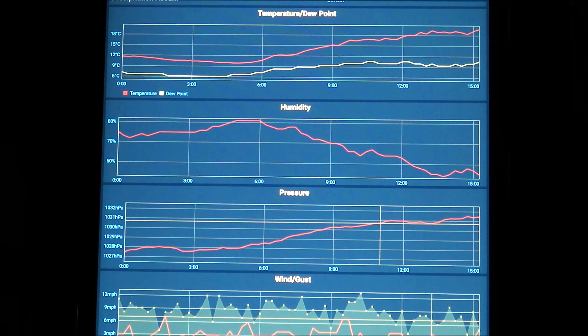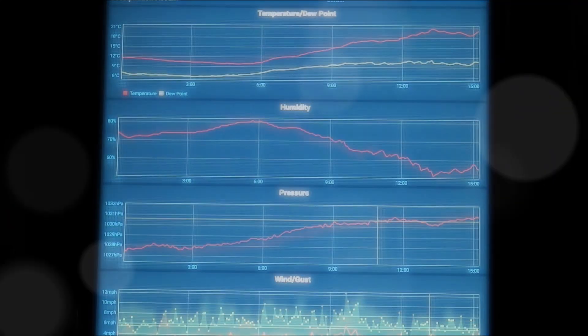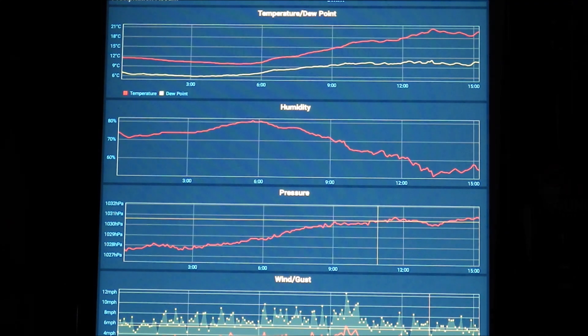We mentioned earlier that we have a semi-professional station running alongside the EcoWIT station. Here's a capture of the graphical display from the semi-professional station, and here's the EcoWIT data. You can see they're very closely aligned. In fact, the EcoWIT updates to Weather Underground every minute, whereas the semi-professional station updates every five minutes.